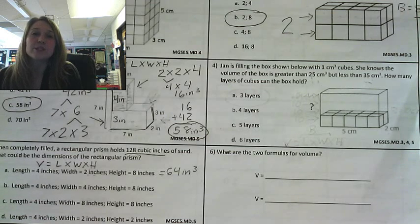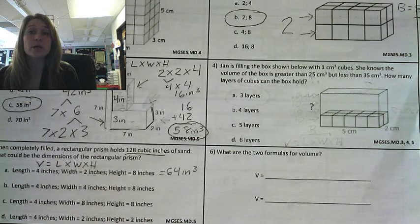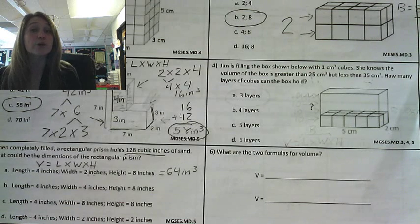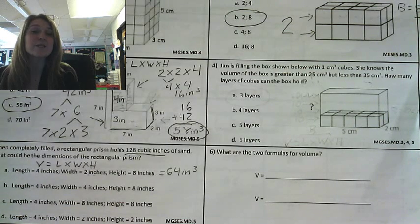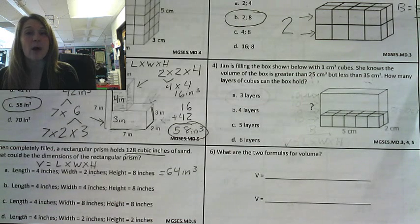Let's look at the question. Jan is filling the box shown below with one centimeter cubed cubes. She knows the volume of the box is greater than 25 centimeters cubed, but less than 35 centimeters cubed. How many layers of cubes can the box hold?